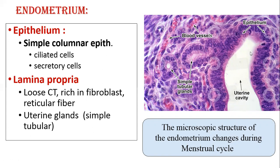Coming to the endometrium — it is the inner lining of the uterine cavity. This lining is simple columnar epithelium, which contains ciliated cells. In between the ciliated cells, there are also secretory cells. Beneath this epithelium, the endometrium consists of two layers: the epithelium and sub-epithelial connective tissue called lamina propria, which contains loose connective tissue rich in fibroblasts and reticular fibers. In addition, there are uterine glands, which are epithelial invaginations.